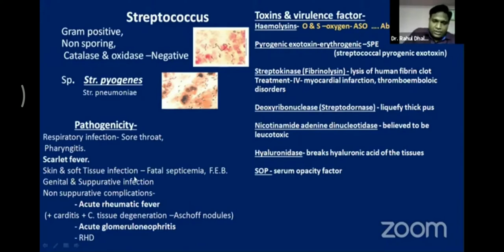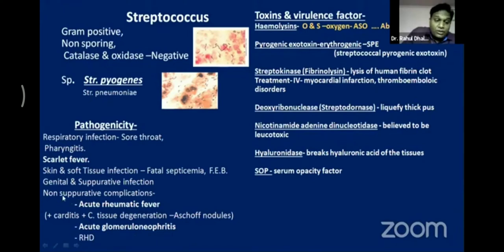Streptococcus pyogenes can cause suppurative (pus-forming) complications. Very importantly, it can also cause non-suppurative complications — with no pus formation — which are serious: acute rheumatic fever and acute glomerulonephritis. For MCQs, the non-suppurative complications of Streptococcus pyogenes infection are acute rheumatic fever and glomerulonephritis.